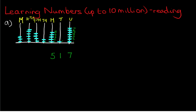How many thousands are there? One, two. And ten thousands — we've got one, two, three, four. The hundred thousands: one, two, three, four, five, and six. And lastly, we've got the millions column: one, two, three. There we go. So that number is what the abacus represents.